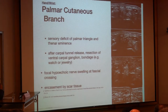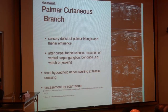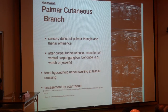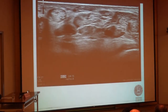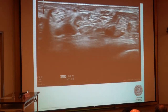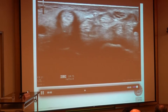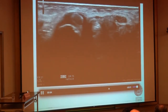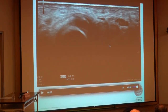There is a lot of scar tissue after CTS surgery around this entrapped, very small nerve. We can see the tiny nerve becoming bigger at the level of the entrapment due to scar tissue, with increased size at the area of the entrapment.